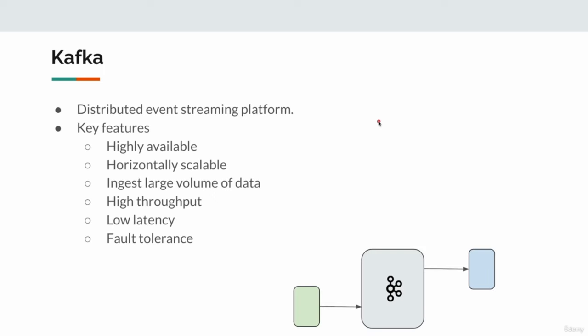There are many event streaming platforms — then why Kafka? Kafka is one of the most popular and widely used event streaming platforms. In fact, we use it at work. Many famous companies like Netflix, Uber, and Walmart all use Kafka. It is open source, highly available, horizontally scalable, and we can ingest large volumes of data while easily achieving low latency and high throughput.